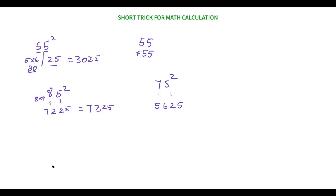Now you might be thinking: what if we have a three-digit number? It's also pretty easy — we follow the same method. Let's take 125 square. First step: five square is 25. Then take 12 and its consecutive number 13, so 12 times 13 is 156. Our final answer is 15625. Let it be any number — whenever it has five in the ones place, this trick applies.